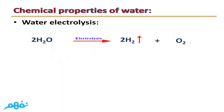Water electrolysis. Electrolysis of water means decomposition of water into its elements. As you can see, if we have two molecules of water and we apply electrolysis, water will be decomposed into two hydrogen molecules and one oxygen molecule.